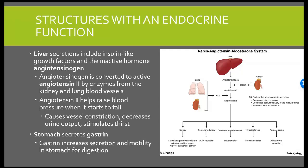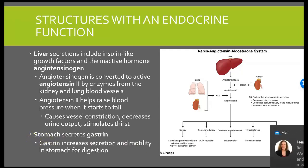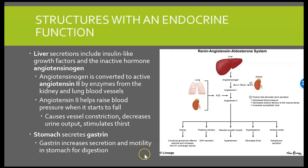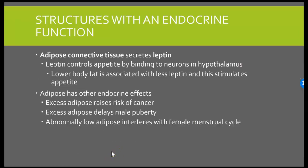Another organ with an endocrine function is the stomach. It's going to produce a hormone known as gastrin. Gastrin is going to increase secretion and motility in the stomach for digestion — and by motility, I'm talking about the muscles contracting in order to churn and help digest that food.